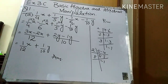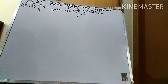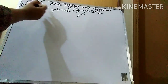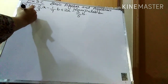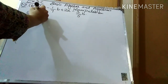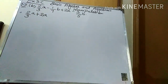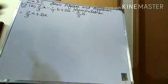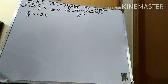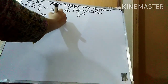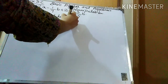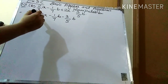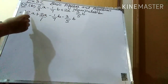Now I'm going to explain part b. Part b is 2/3a − 1/7b + 2a − 3/5b. Again the very first step is to write like terms together. This is an a term and this is an a term, so I write them together: 2/3a + 2a. In the same way I will write b terms together: −1/7b and −3/5b. Both are b terms.